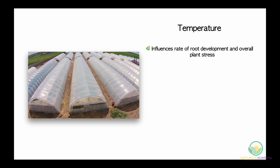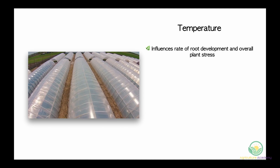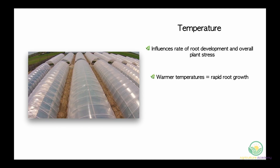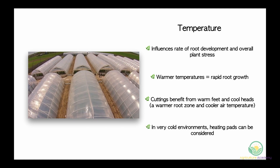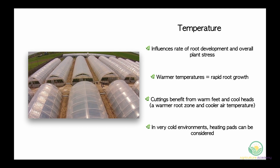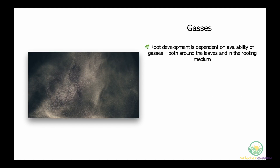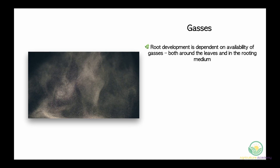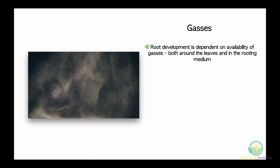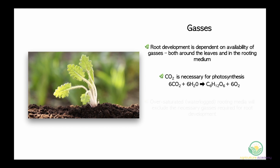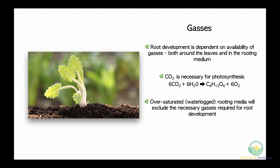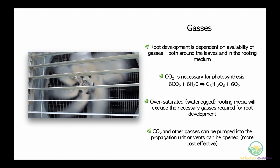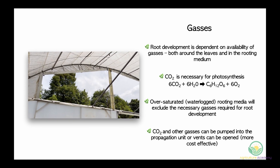Temperature influences not only the rate of root development but also overall plant stress. Warmer temperatures will encourage rapid root growth, with many plants benefiting from warm feet and cool heads. The propagation unit itself will help to retain heat, but in very cold environments bottom heating could be considered. Root development is also dependent on the availability of gases, both around the leaves of the cuttings and in the rooting medium. Carbon dioxide is necessary for photosynthesis, and over-saturation of the rooting medium will exclude the necessary gases required for root development. In some areas, carbon dioxide and other gases can be pumped into the propagation unit, but open vents can often achieve the same result with little extra cost.